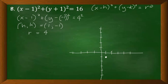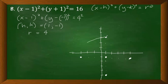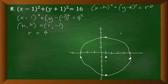Same process as before: count 4 units going up, going down, to the left, and to the right from the center, placing a point at each. Then connect all the points to form the circle. And we are done graphing a circle given a standard form.